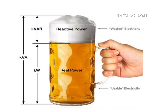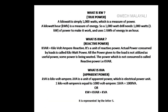The beer content represents KW. If we use the beer bottle, we put in reactive power, then we have KVAR. The total of KW plus KVAR gives us KVA.